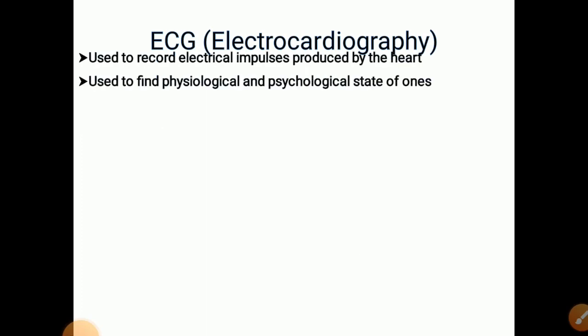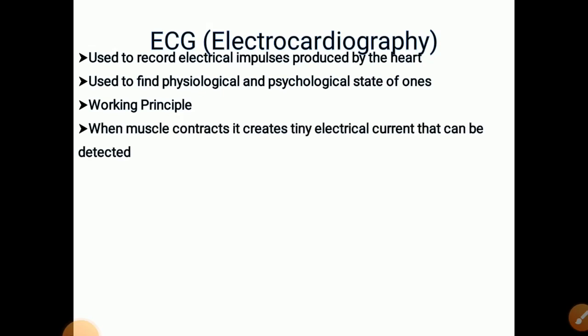ECG, electrocardiography. It is used to record electrical impulses produced by the heart. It is used to find physiological and psychological state of ones. When muscle contracts, it creates tiny electrical current that can be detected.